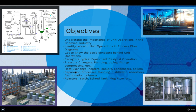So at the end of the course, you should be able to: one, understand unit operations, identify them, and know how they are operated. And number two, be able to detect them if you see them in a real-life picture — at least know that this is a storage tank, this is a tank reactor, this is the distillation column, this is the pump, the compressor, and so on. This will definitely help you not only to understand chemical plants, but also to start modeling unit operations.